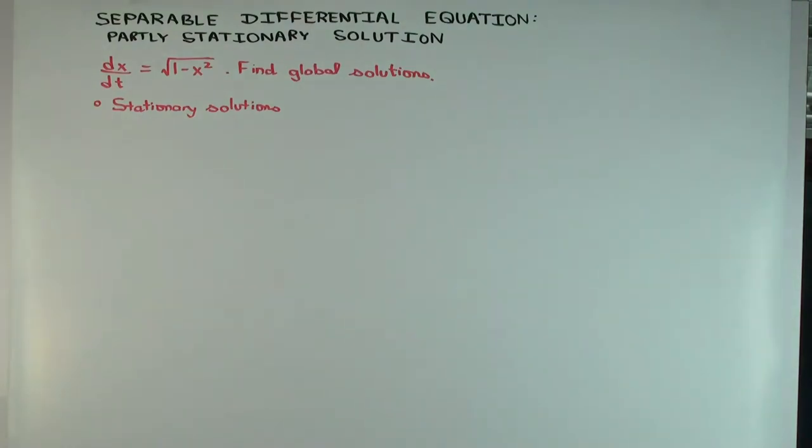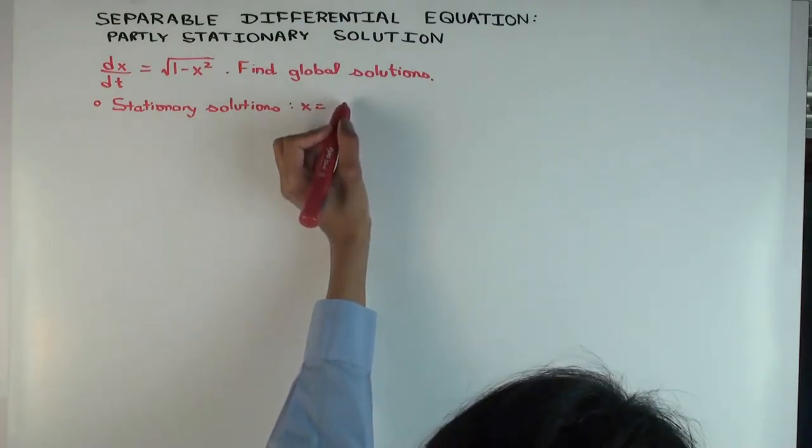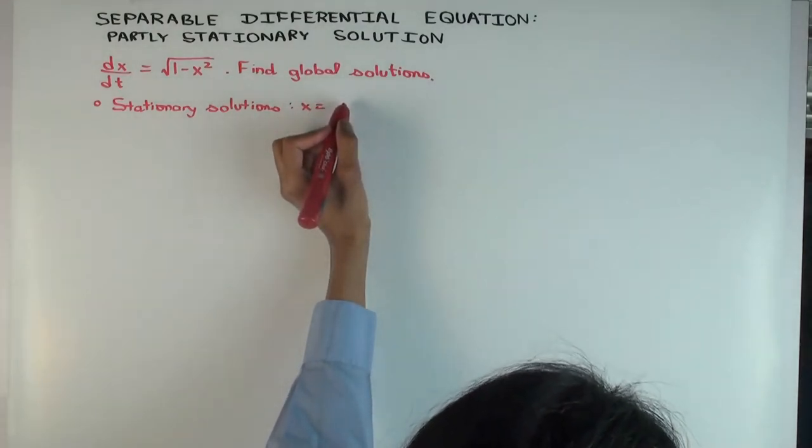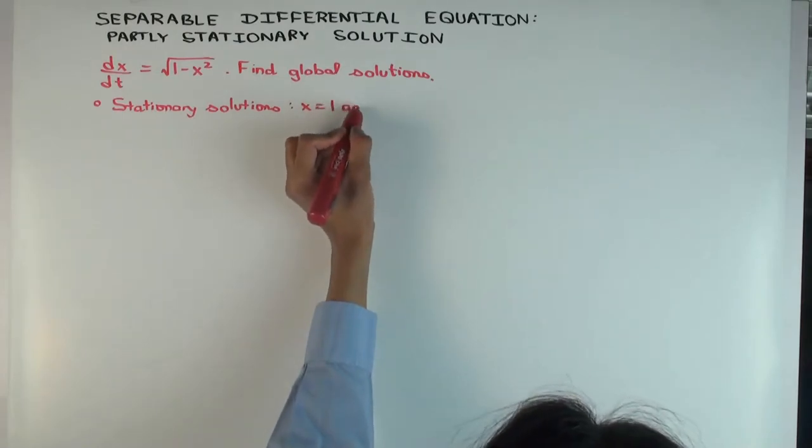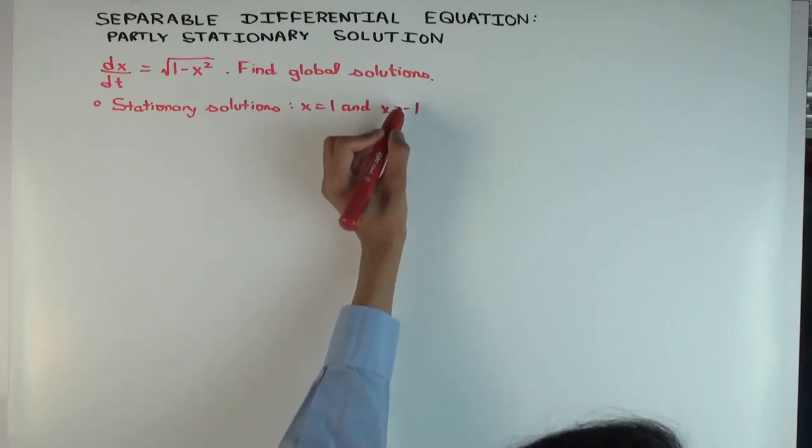x = 1 and x = -1. Yeah, x = 1 and x = -1. So far so good. Okay, good.